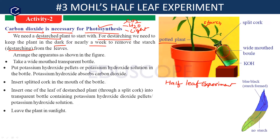Now let us arrange the apparatus as shown in the figure. The first point: take a wide-mouthed transparent bottle. The bottle's mouth should be wide — wide ga undali, bedal pu ga undali. It should be transparent so that sunlight can reach and pass through the bottle to the leaf inside.